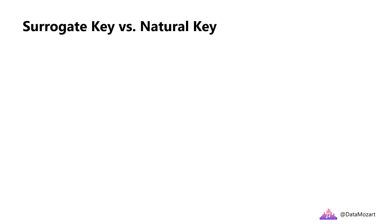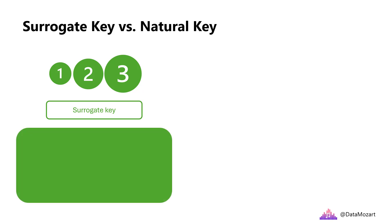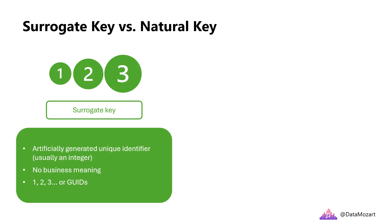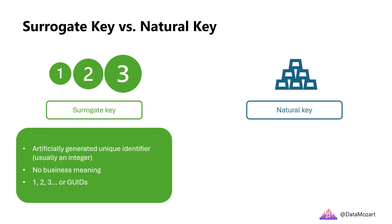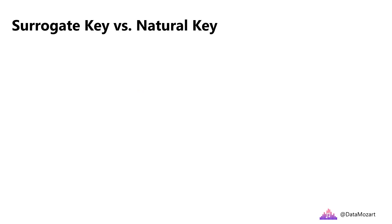Another crucial concept to understand is the difference between surrogate and natural keys — note that a natural key is sometimes also referred to as a business key. Surrogate keys are artificially generated values that serve as unique identifiers in database systems. They don't have any business meaning; usually they are represented as integer values starting from 1 and sequentially increasing, or as GUIDs, which are special data types generated and managed by the database system itself. A natural or business key, on the other hand, represents a unique attribute or set of attributes that exist in the data, has business meaning, and is usually a customer key, product code, or similar.